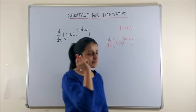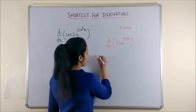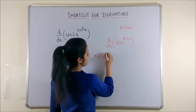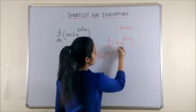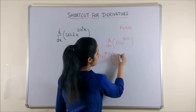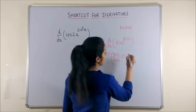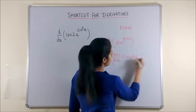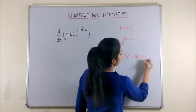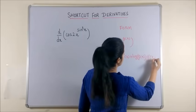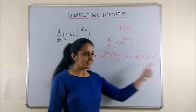then you just need to remember one small formula which is write down the function as it is. Here, write g(x) upon f(x) into the derivative of the function plus log of the function into derivative of its power. And that's it.